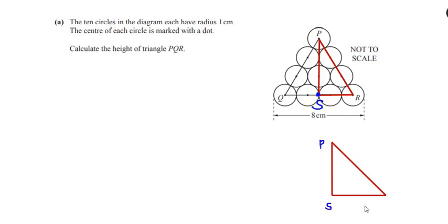The points are P, S, and R. Since we have to find out the height, let us take PS as h. PR is the hypotenuse of the right-angled triangle PSR. To find the hypotenuse, since the radius of each circle is 1 centimeter, from point P to the next point we have 1 centimeter, and each successive radius also counts as 1 centimeter.